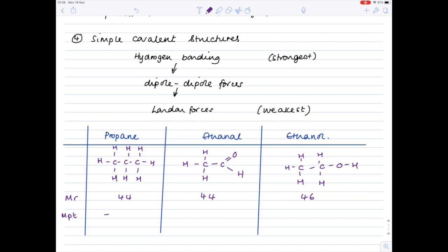Well, propane has a very low melting point of minus 42 degrees celsius. Ethanol has a melting point of 21 degrees celsius and then ethanol has a much higher melting point of 79 degrees celsius. So what accounts for the differences?